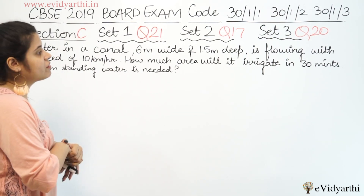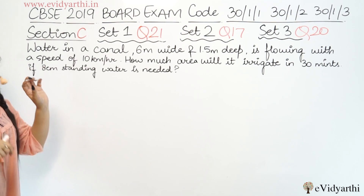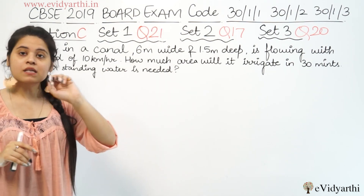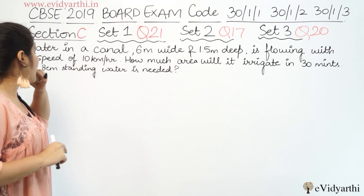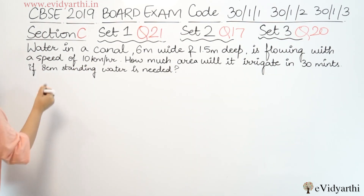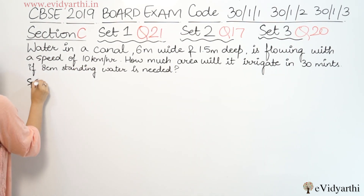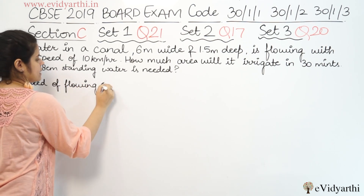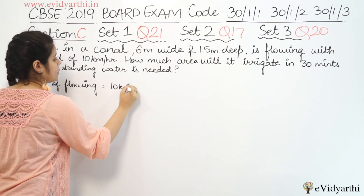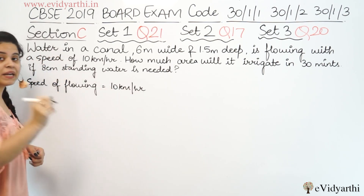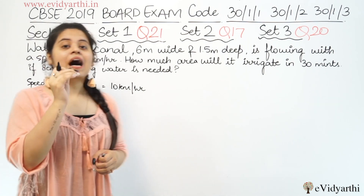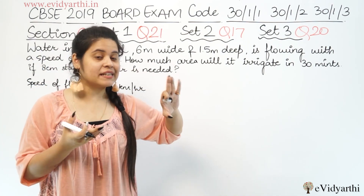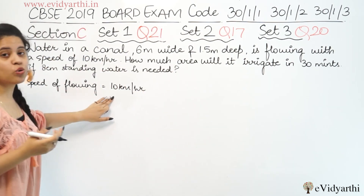This is the flowing speed. If you need volume, you have length, width, and height — these two things you already have. Speed of flowing is given to be 10 km per hour. How much area will it irrigate? 30 minutes, which is basically half an hour.